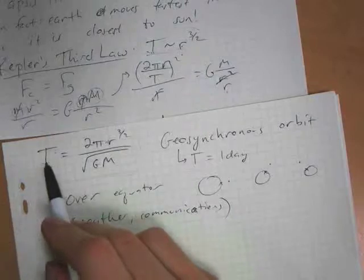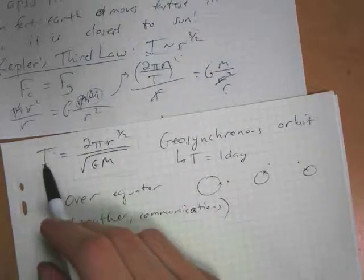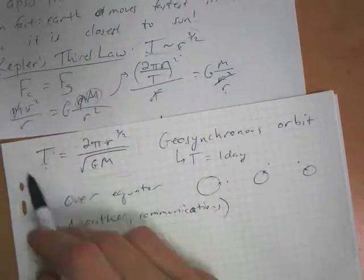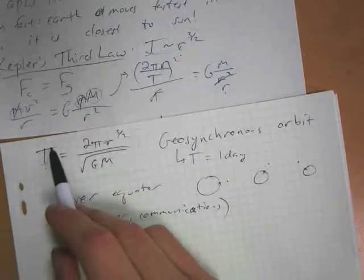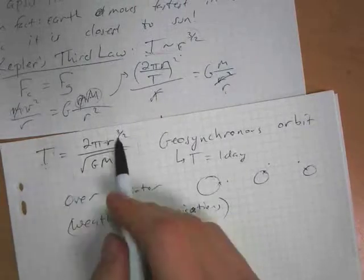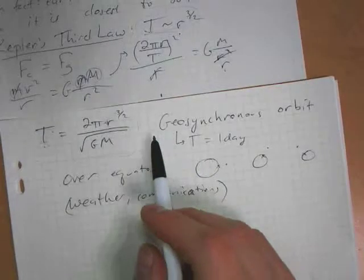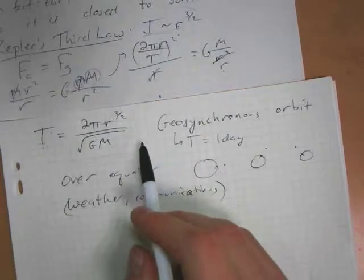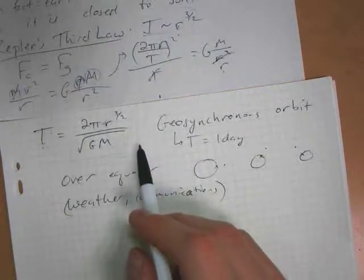we can figure out the plug in 24 hours times 3600 seconds per hour, plug in the period of the orbit that we want, we can figure out the distance from the center of the Earth those objects, those satellites are rotating at.